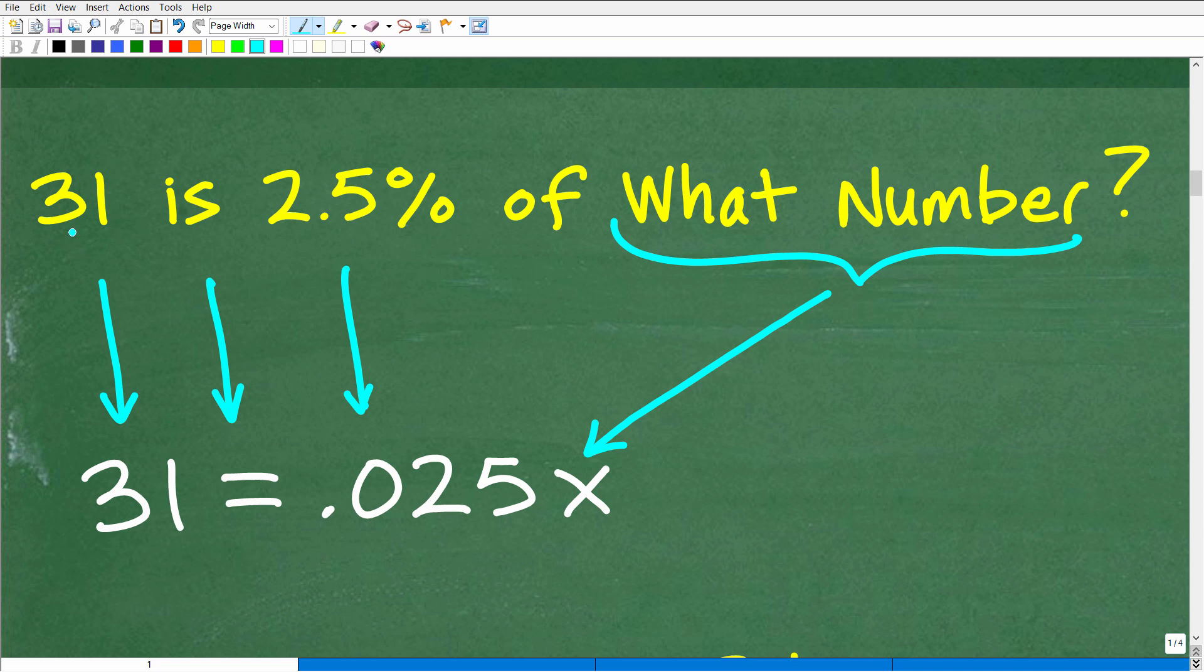So what we want to do is translate this verbal question into an algebraic question. We're just going to read this sentence and translate into an algebraic sentence. So we have 31, which, of course, is 31 is or is equal to. Anytime you see the word is, that is the equal sign. So 31 is or 31 is equal to. So we're going to write an equal sign right there. 2.5%. Now, we know that we're going to have to change this percent to a decimal. So 2.5% as a decimal. Remember, we're just going to scoot that decimal point over two places to the left. So that's going to be 0.025.